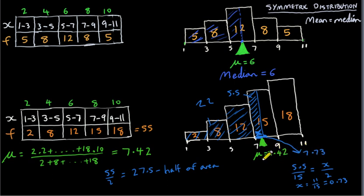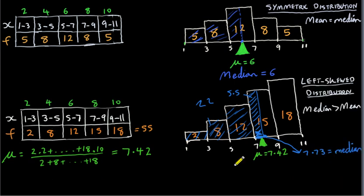So you can see the median, 7.73, is actually greater than the mean, 7.42. That's always the situation for a left-skewed histogram. The tail is to the left — that's why we call it left skewed — and the median is greater than the mean.